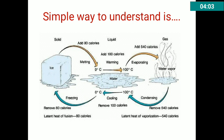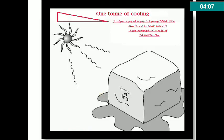These 540 calories are the latent heat of vaporization. A simple representation: if the latent heat of ice is 336 kJ/kg, then one ton of refrigeration is equivalent to heat removal at a rate of 14,000 kJ per hour.